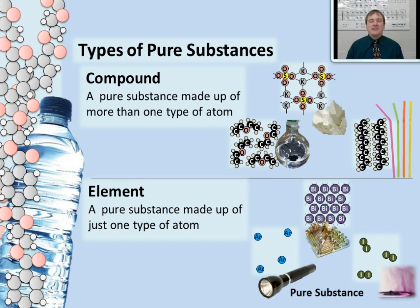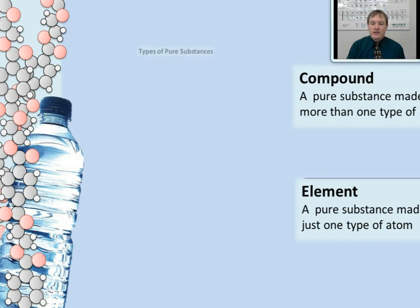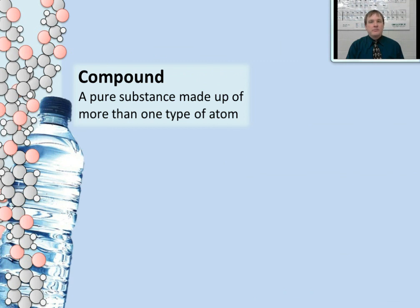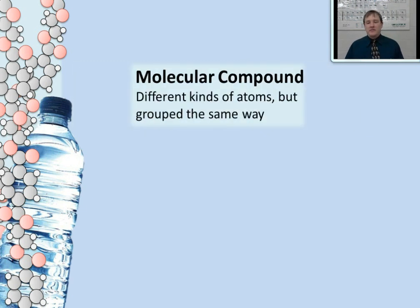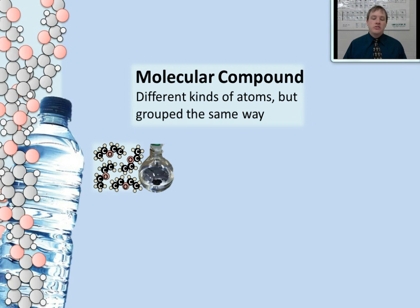Let's take a look at what makes ether a molecular compound. A compound is a pure substance made up of more than one type of atom, and a molecule is a group of atoms bonded together. So to make a molecular compound, you simply have to have different kinds of atoms, but they're grouped together to make the same kinds of molecules. Every molecule has to be made up of the exact same kinds of atoms bonded the same way to have a molecular compound. Notice that in ether, that's exactly what's happening.